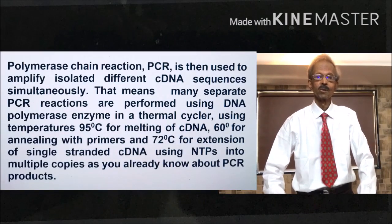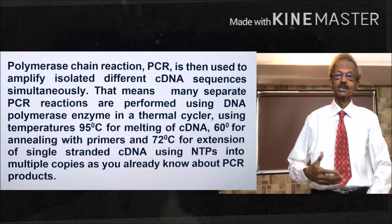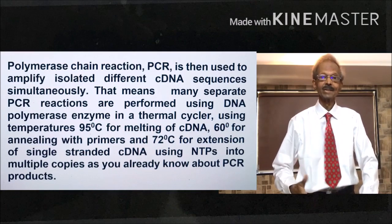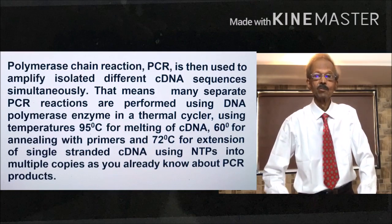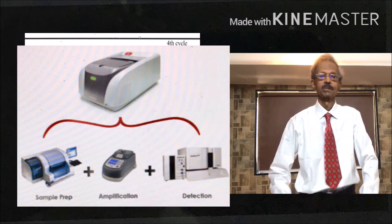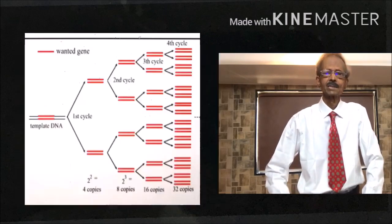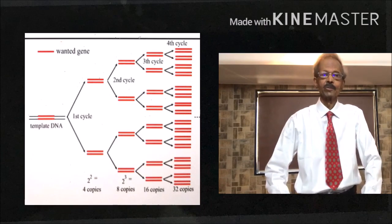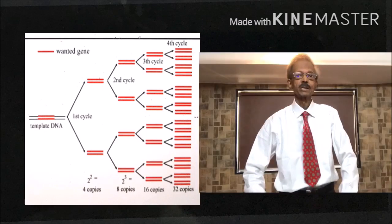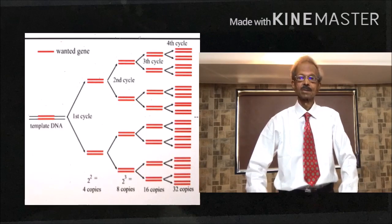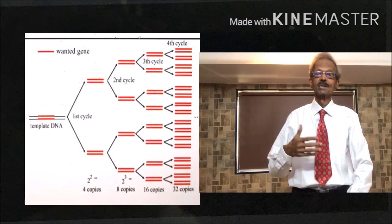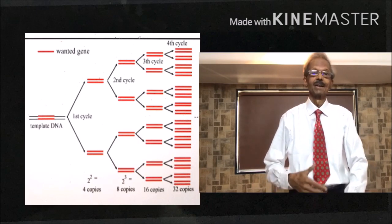Polymerase chain reaction is then used to amplify isolated different cDNA sequences simultaneously. That means many separate PCR reactions are performed using DNA polymerase enzyme in a thermal cycler using temperatures 95 degrees for melting, that means denaturation of cDNA, 60 degrees for annealing with primers and 72 degrees for extension of single-stranded cDNA using NTPs into multiple copies as you already know about PCR products.